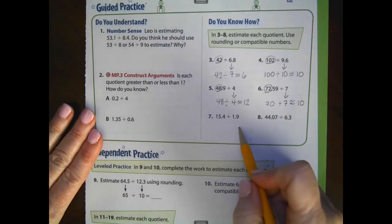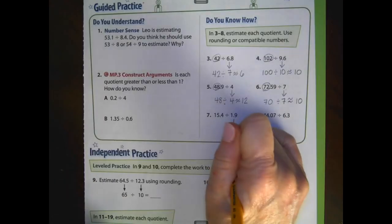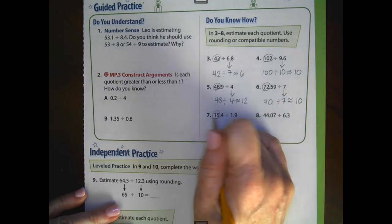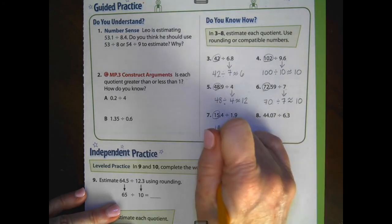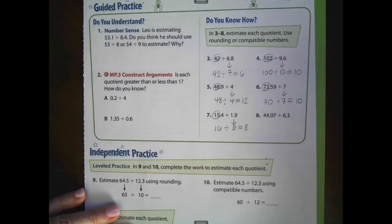Number 7. Look at that divisor. It is a decimal number. So we're going to round it to the nearest whole number. That gives me 2. A number very close to 15 that's divisible by 2. I'm going to use 16. 16 divided by 2 would give me an estimated quotient of 8.